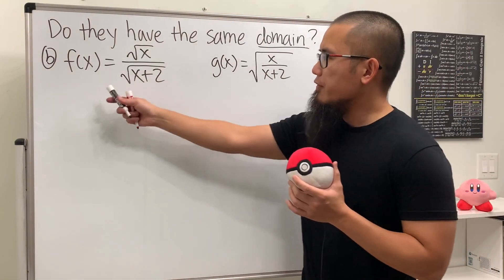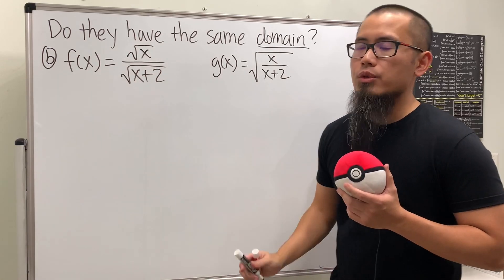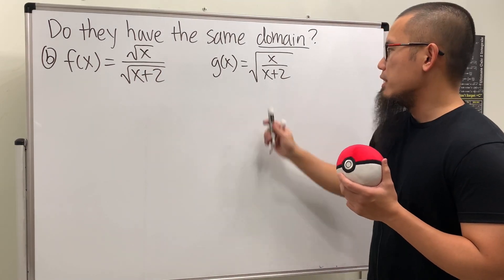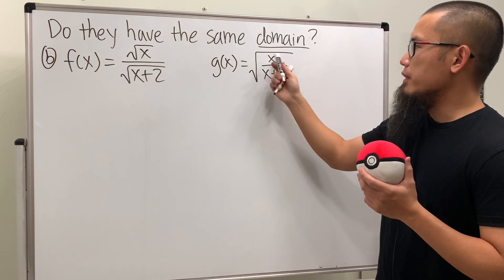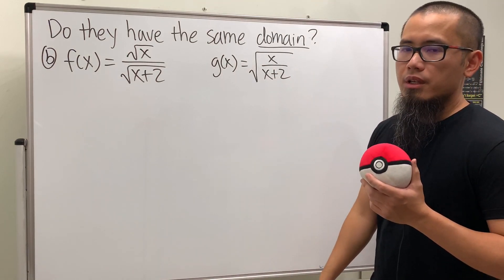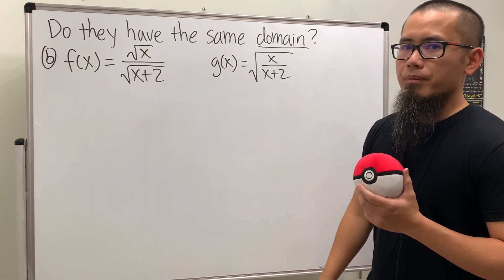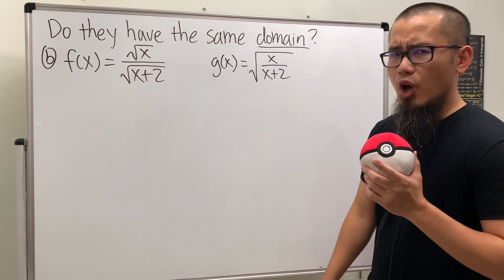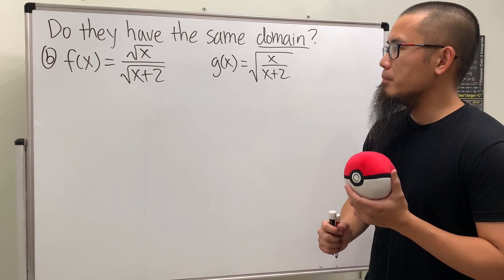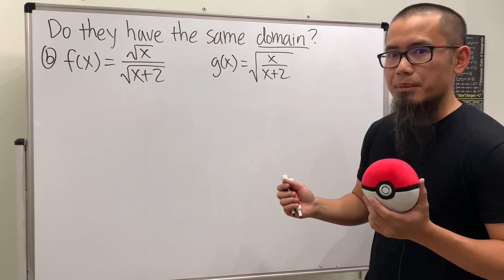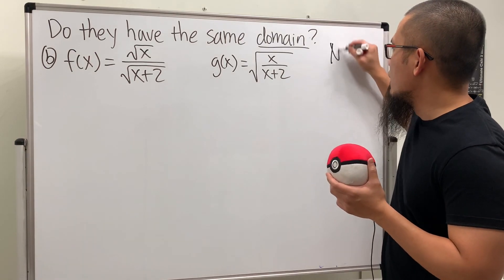Number two is really tricky. f of x is square root of x over square root of x plus 2, and g of x is just square root of x over x plus 2. Aren't they the same? Yes, only on their common domain — but they do not have the same domain, so this is also a no.